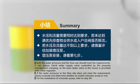Both the water pressure and the flow rate should meet the requirements. If not, please check water supply valve controlled by the property management company or the main water valve in the house. Check if it is provided with a flow regulator. If the water pressure or the flow rate does not meet the requirement, please evaluate and determine whether to install a booster pump or not. For the installation of a booster pump, refer to step 7.